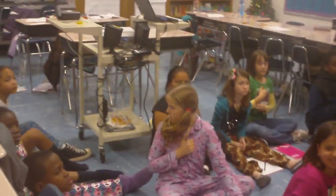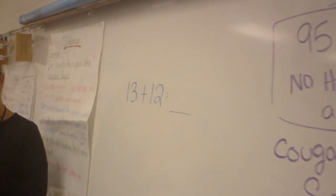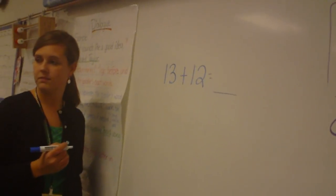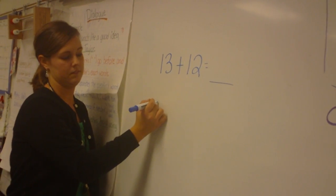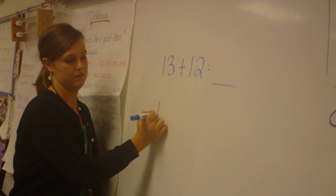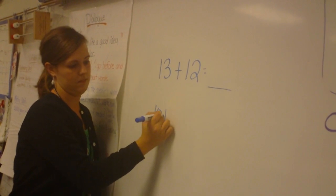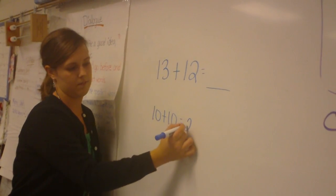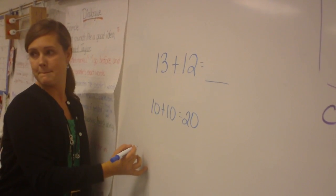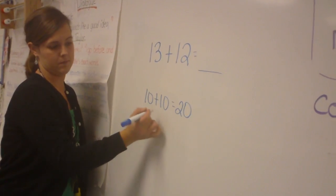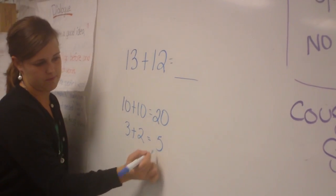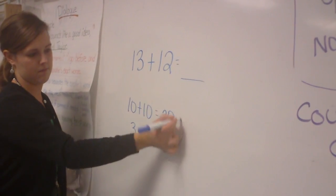Okay, Skylar, how did you get it? 25. Yes, okay. You got 25 — and how did you get that? Because I did 10. I know that there's 10 in each one, so I did 10 plus 10 equals 20. And then I know that 3 plus 2 is 5. And then I added 20 plus 5 together.